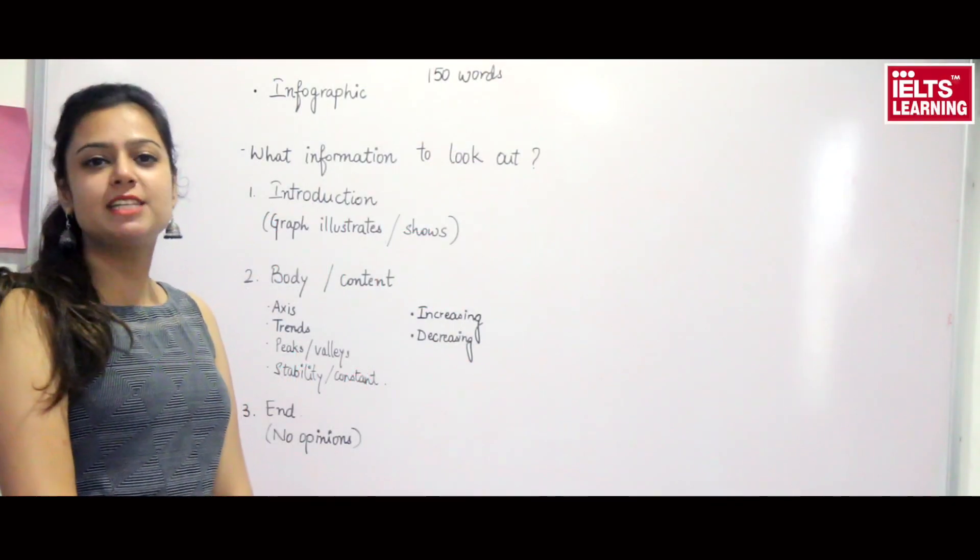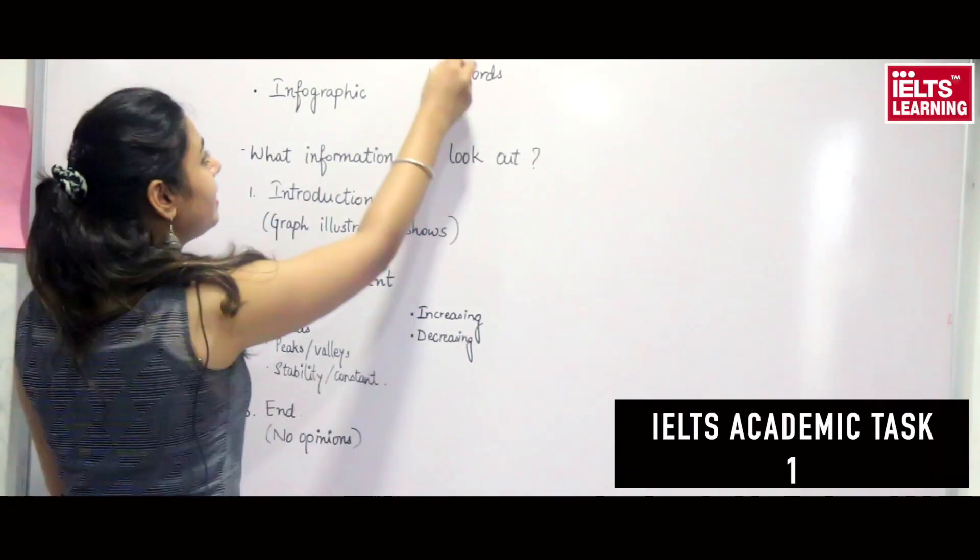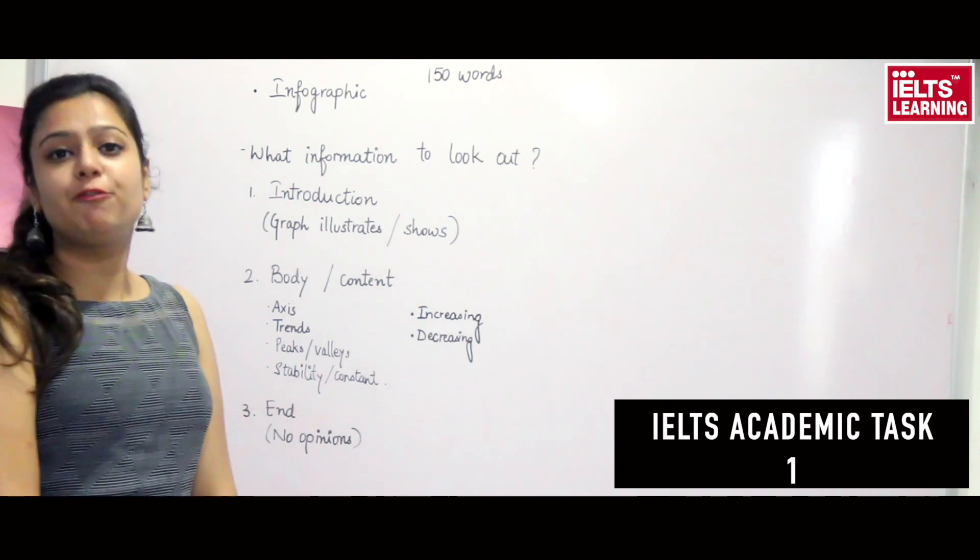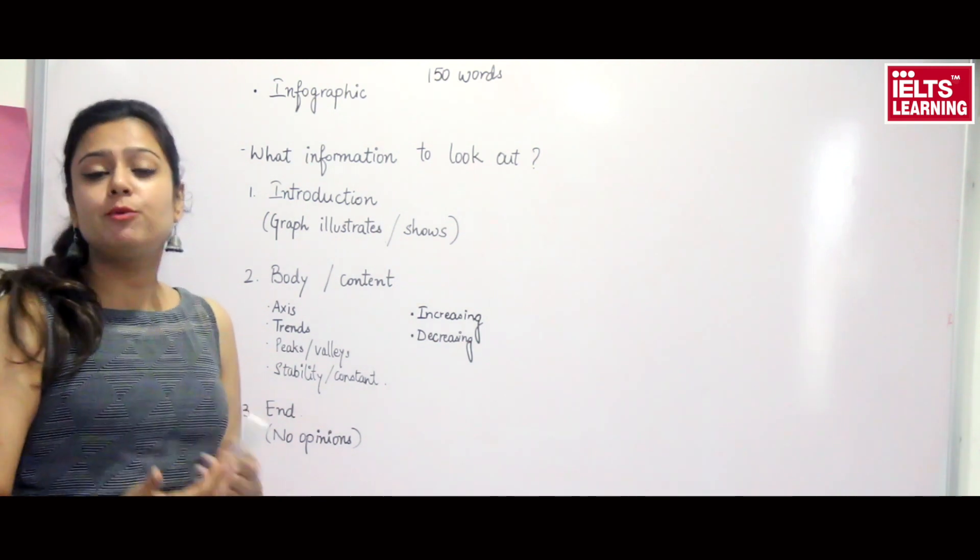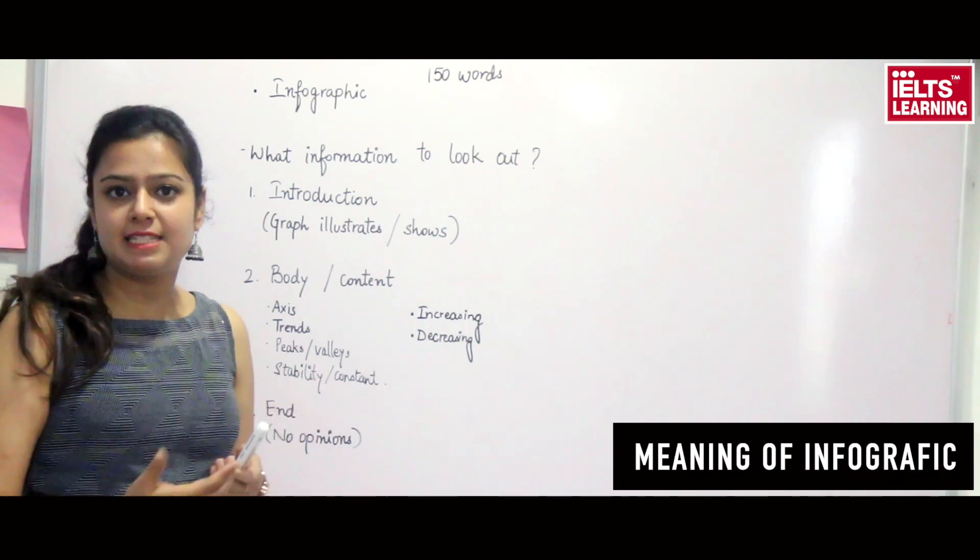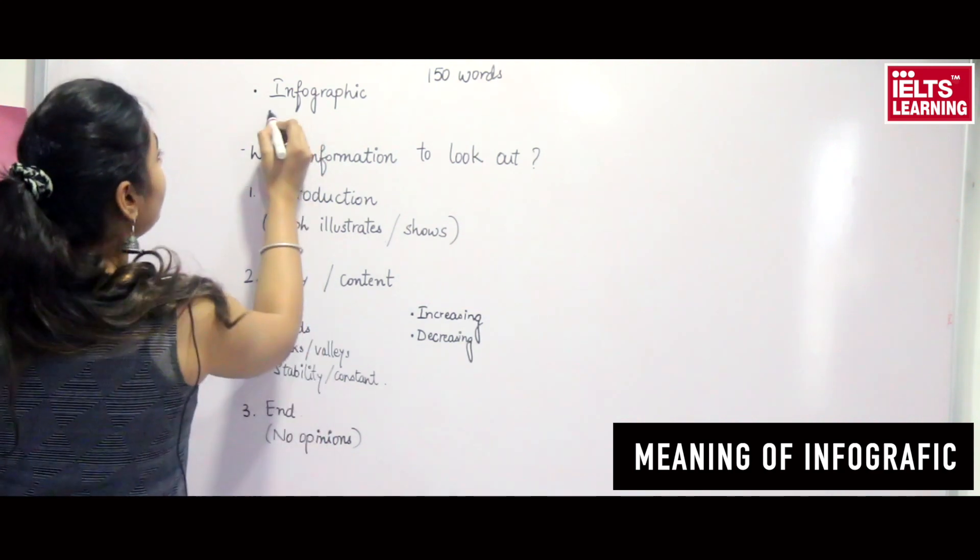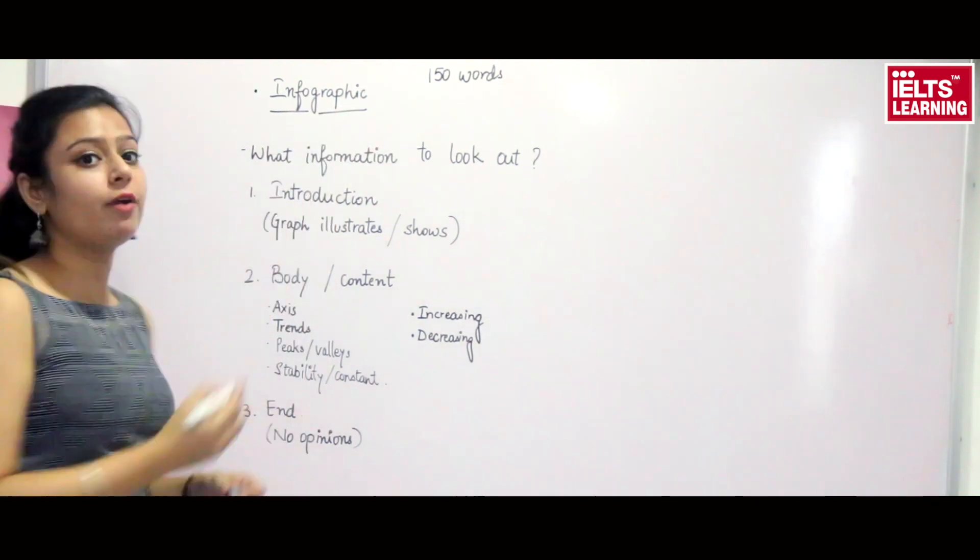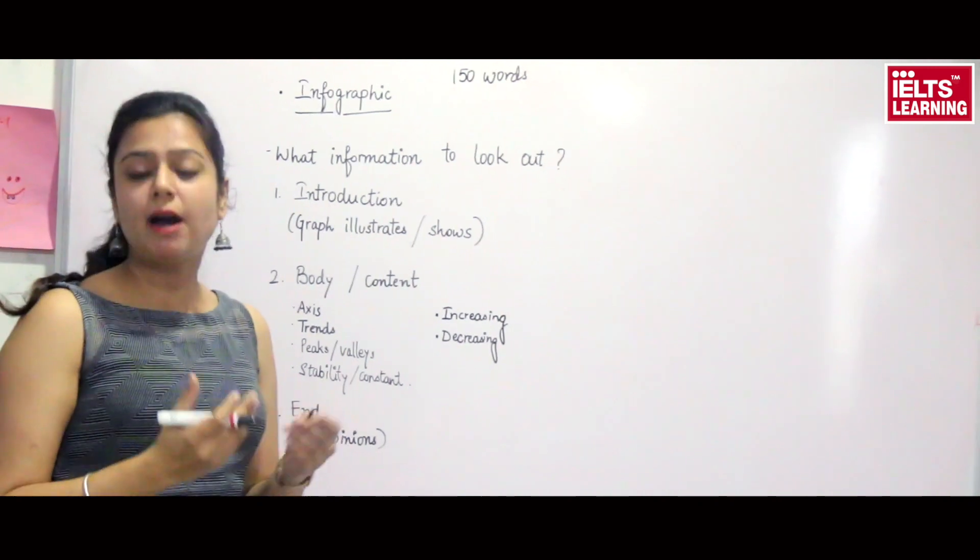Hello friends, today I am going to explain IELTS Academic Task 1. It's about the infographic, which means information from a graph. A graph can be anything like a bar graph, pie charts, or tables.